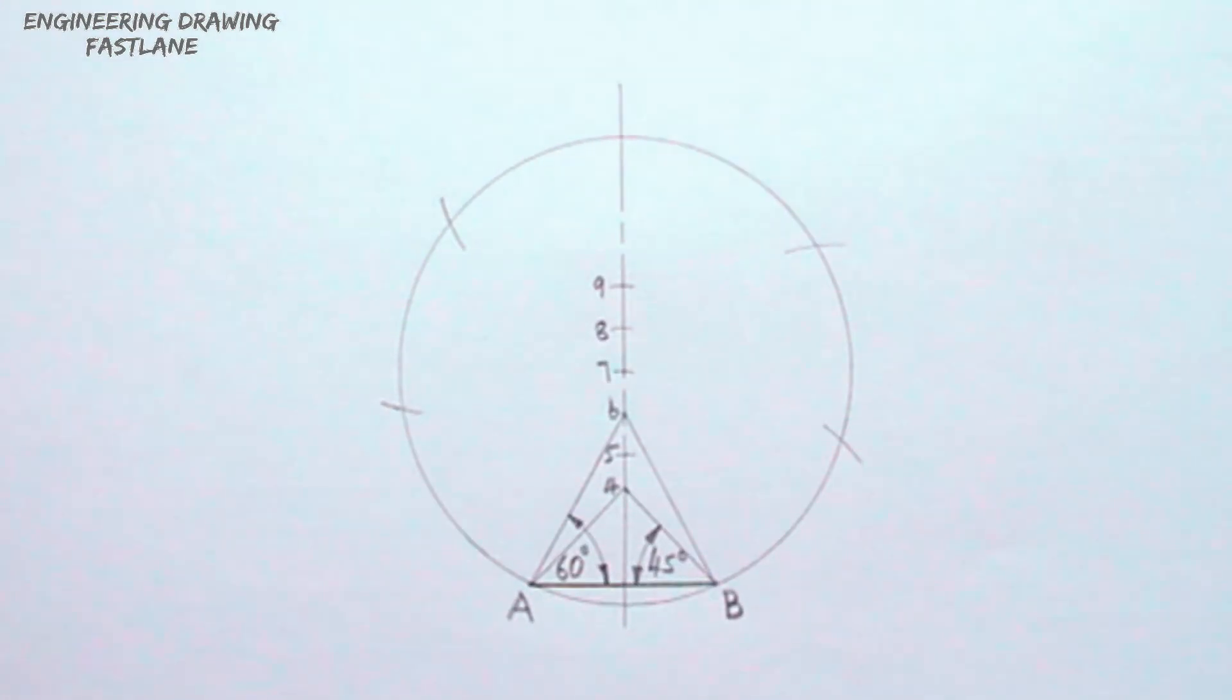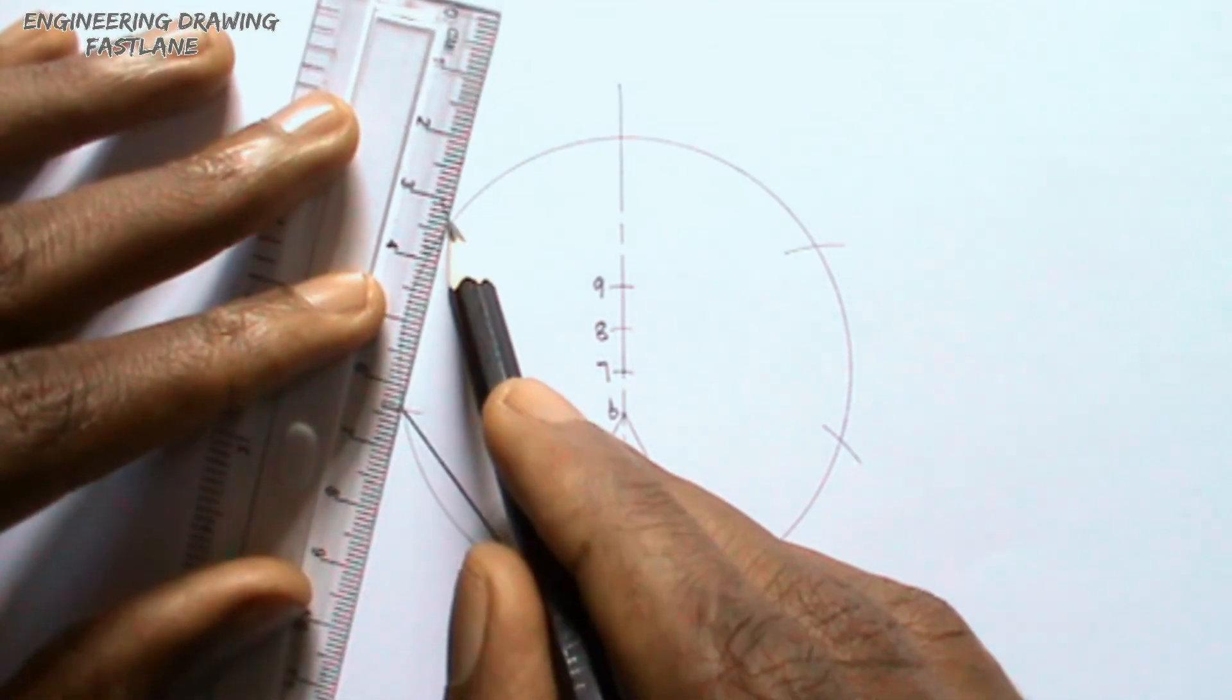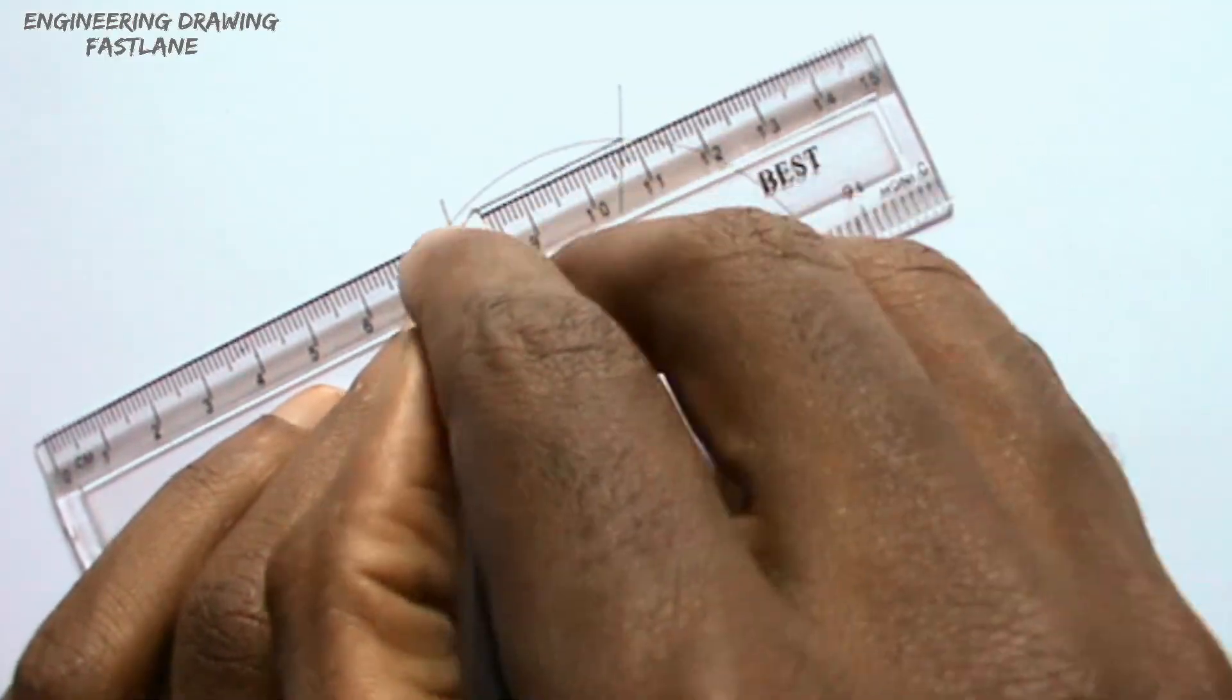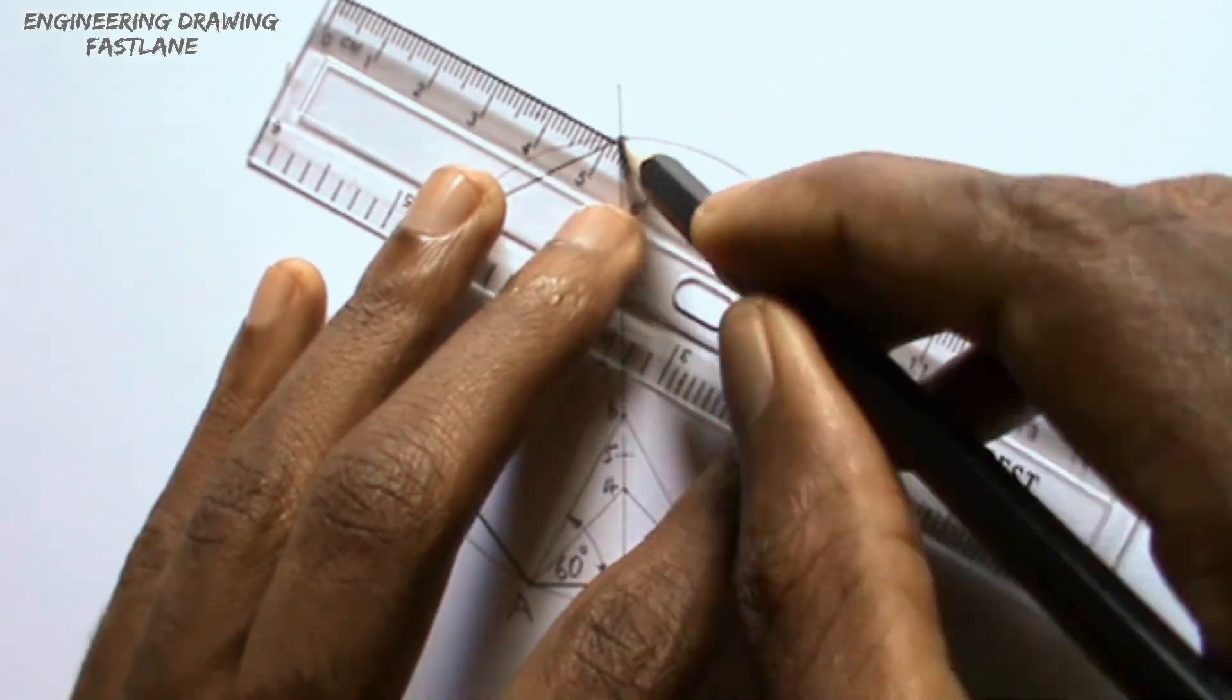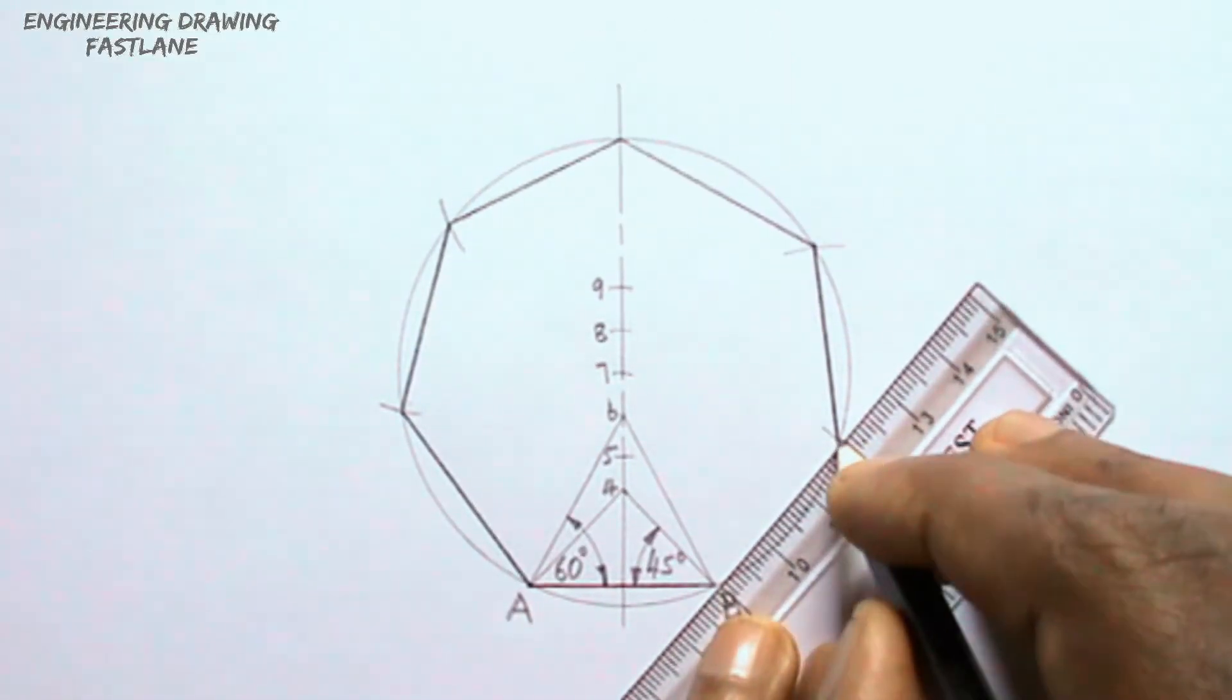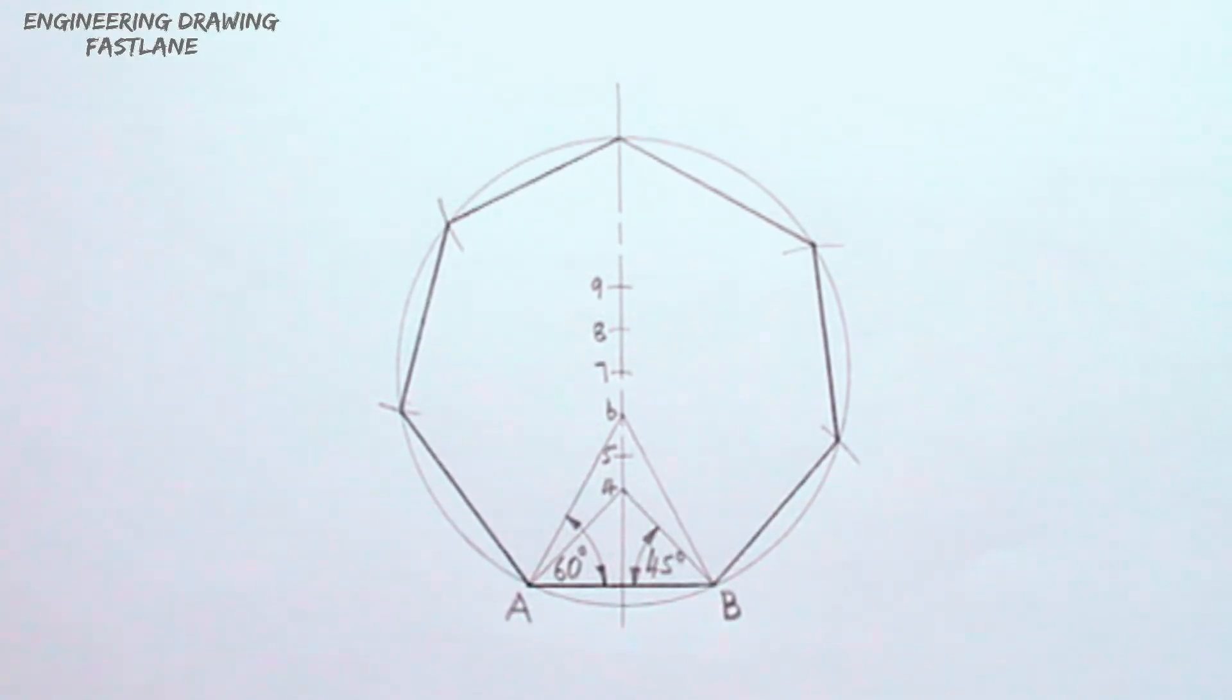I will now join the points to obtain my required polygon which is a heptagon. The heptagon has been drawn successfully.